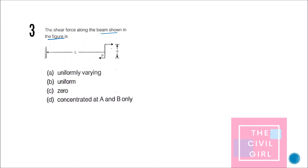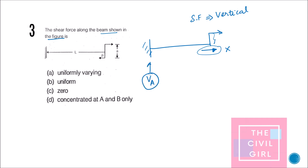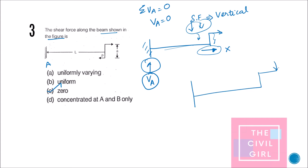Next question: the shear force along the beam shown in the figure is what? Shear force is always related to vertical forces; horizontal forces will not cause any effect on shear force. In this cantilever beam there is only one vertical force — VA at the support. Since there are no vertical forces acting, VA equals zero, and therefore the shear force in the beam is zero.